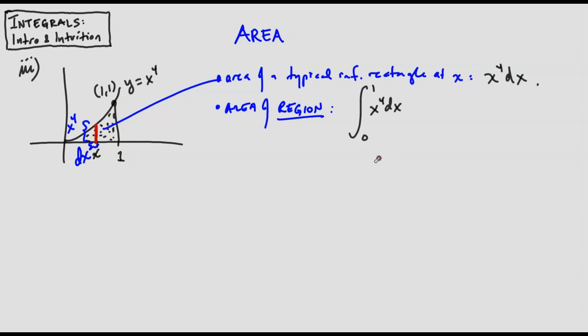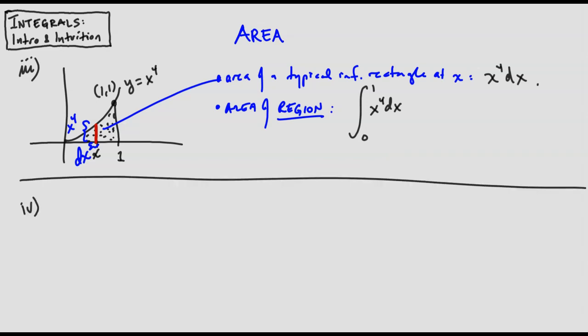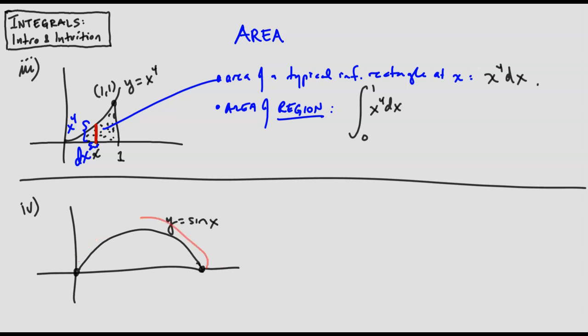I'm going to do one last example that leads to something interesting. Suppose we look at one arch of the sine wave, y equals sine of x. This arch ends where x is pi. It's an interesting question: what is the area under one arch of the sine wave? You might guess it has something to do with pi, since there's a pi here and trig functions are built on circles—wherever there are circles, there is pi. We will answer this interesting question soon, though not today.